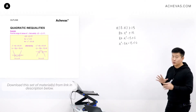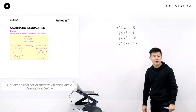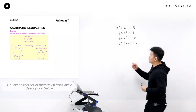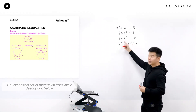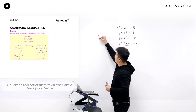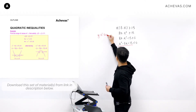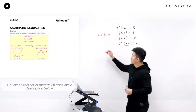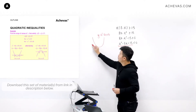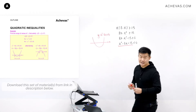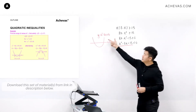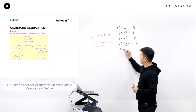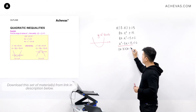The next thing to do is to make use of our ability to sketch the graph of a quadratic function to solve this inequality. The quadratic function I'm going to sketch is y = x squared minus 8x plus 15. The coefficient of x squared is positive, so I'll be expecting a smiley face. I'm going to factorize this quadratic expression: x minus 3 and x minus 5.